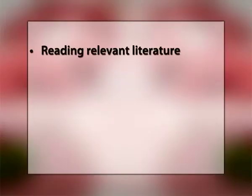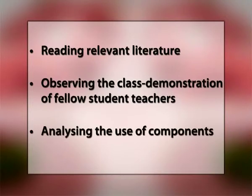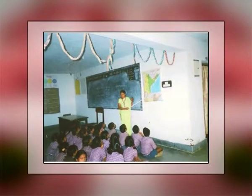Reading relevant literature, observing classroom demonstrations of fellow student-teachers, and analyzing the use of components in the unit helps in the knowledge acquisition phase. In the skill acquisition phase, the teacher-trainee selects a unit and plans it according to the components of the skill. He then demonstrates the unit, gets feedback, and then replans and reteaches the same unit until he acquires the level of mastery. In the transfer phase, the skills and their components, after being mastered, are integrated and transferred to real classroom teaching situations.